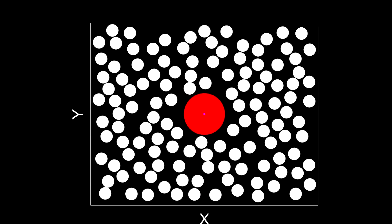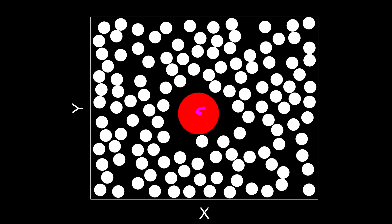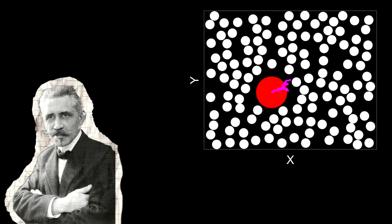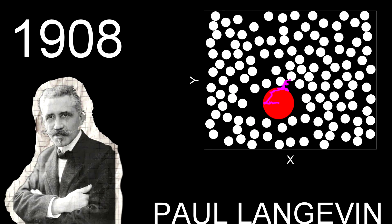Now, Einstein was not the only one that helped understand the physical foundation of Brownian motion. In 1908, French physicist Paul Langevin gave an analogous mathematical description of Brownian motion.